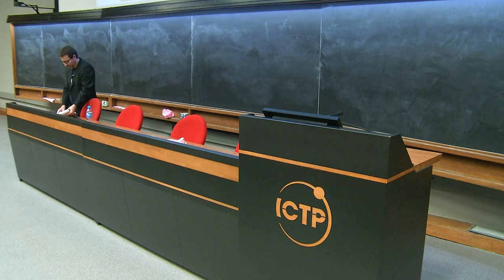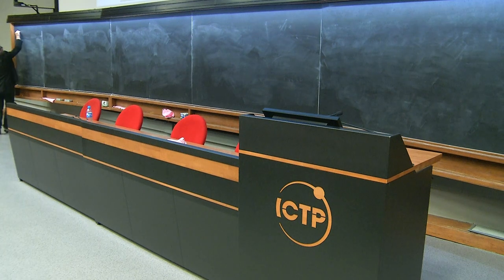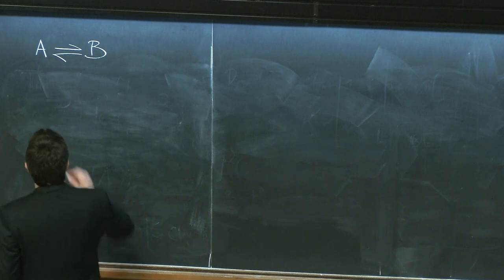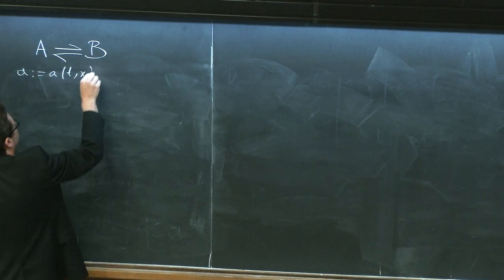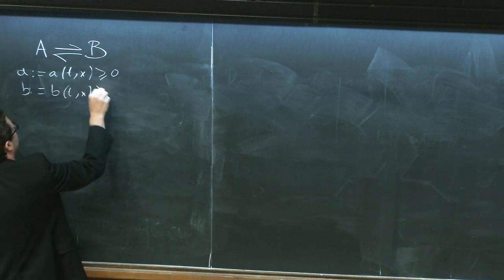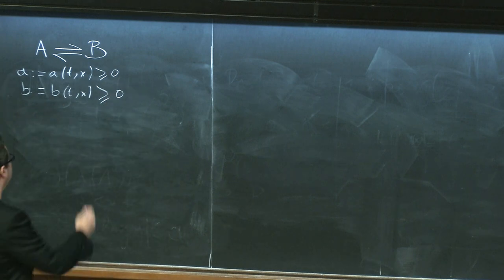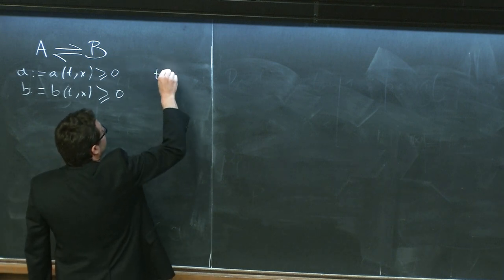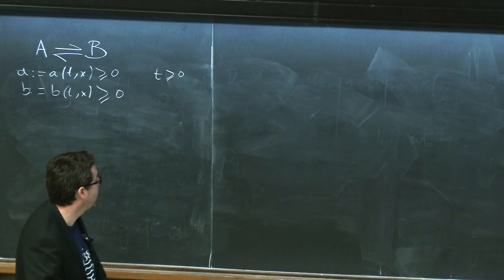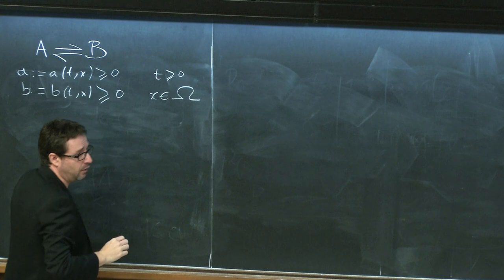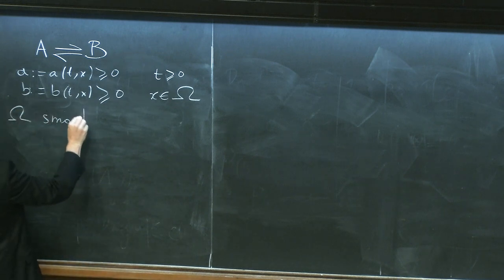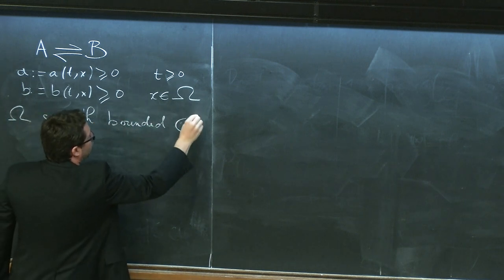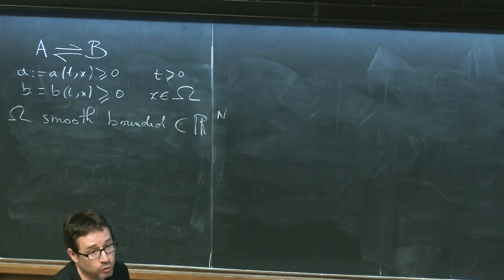Let me briefly recall the set of equations I wrote down. This is related to the reversible chemical reaction between two chemical species, which we call A and B, and we define the concentration of those species by small a and small b. Those are two functions of t and x. T is typically a time in R-plus, and x belongs to a smooth bounded set omega included in R^n; for real applications n equals 2 or 3.